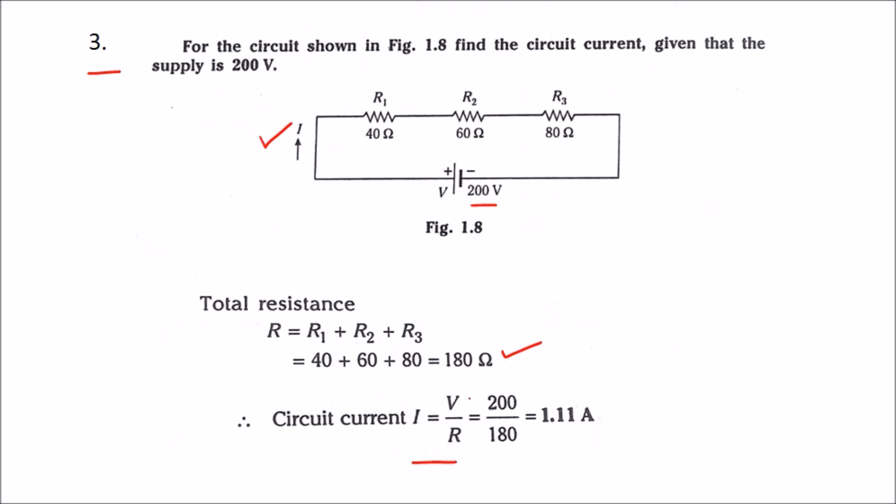The V value is the supply voltage, which is 200 volts, and the equivalent resistance is 180 as we have calculated. So if we do V by R, we get the circuit current as 1.11 amps.